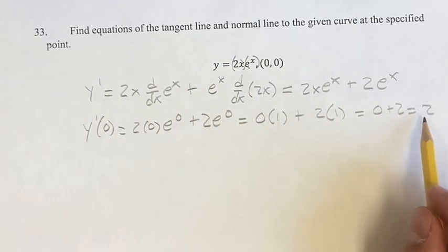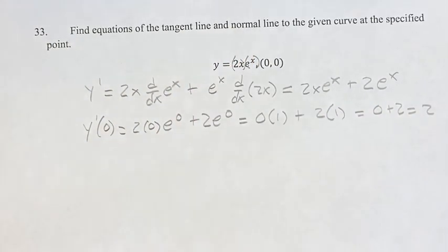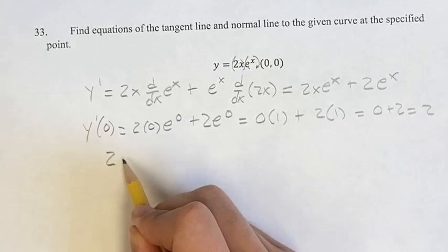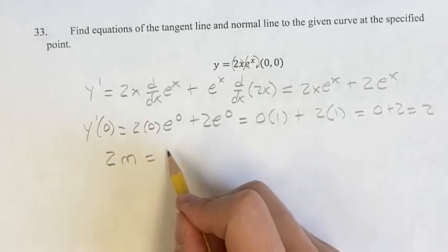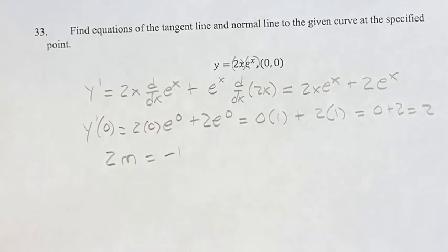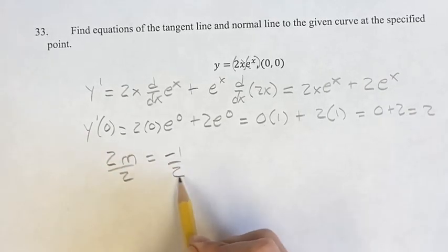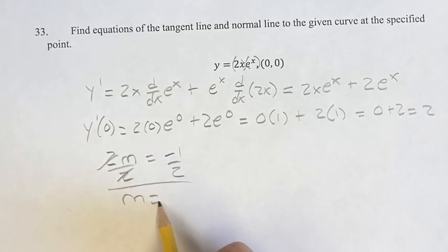So this is the slope of the tangent line. The normal line is going to be perpendicular to it, so that means 2 times m, where m is just the slope of the normal line, is equal to negative 1. The slopes of two lines that are perpendicular to each other are negative reciprocals. Dividing by 2, m is equal to negative 1 half.